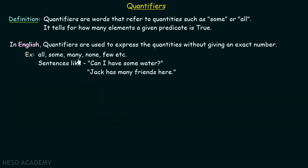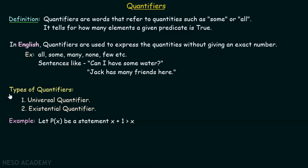The quantifier words are: all, some, many, none, few. In mathematics also, we use these quantifiers, and they are very important in predicate logic. They are helpful in telling us for how many elements a particular predicate or sentence is true. There are two types of quantifiers: the first is the universal quantifier, and the second is the existential quantifier.